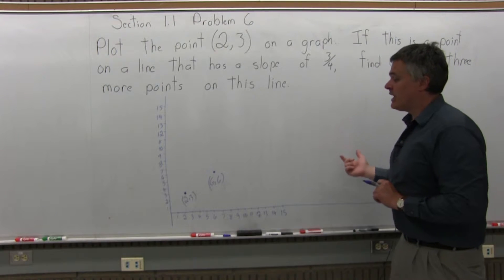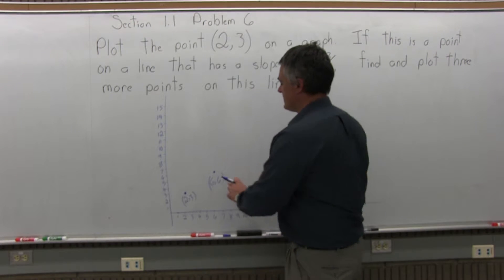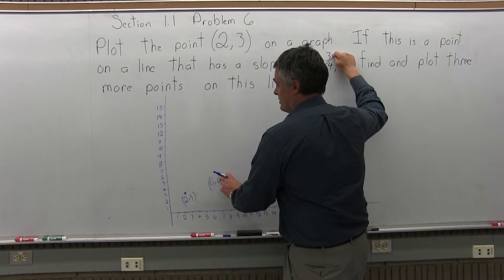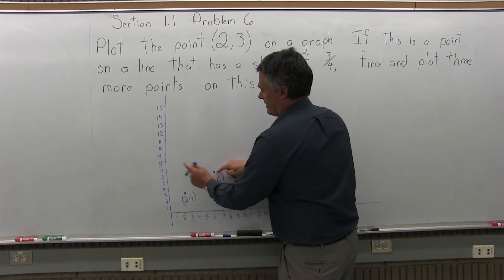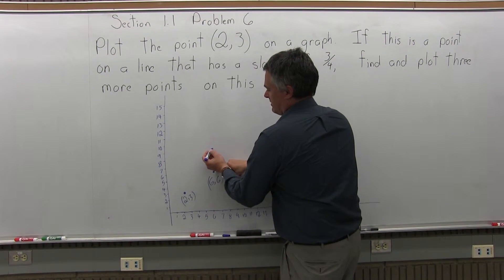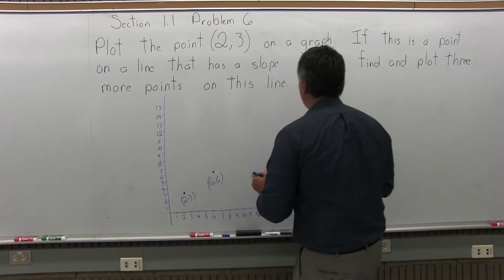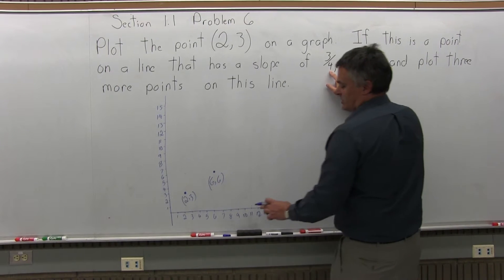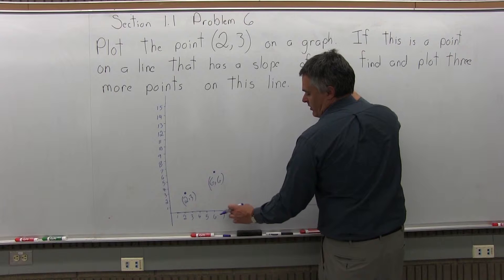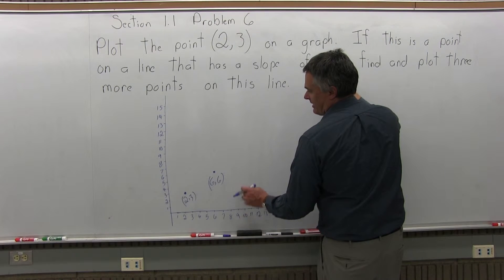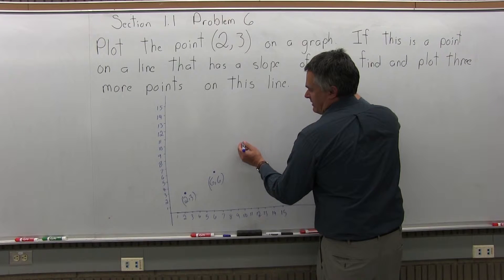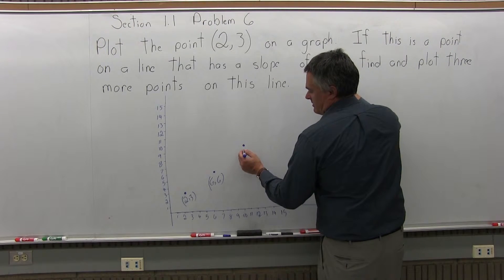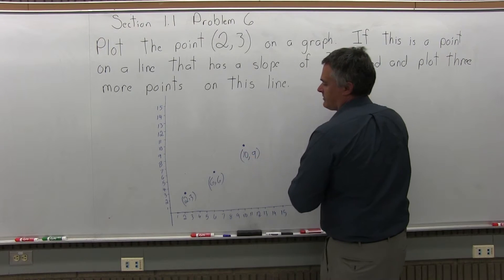To find another point, take the height of 6 and add the numerator: 6 plus 3 more is 9. The next point will be at a height of 9, but we pull it over 4 more in x. We were over 6, so 6 plus 4 more is 10. Going over 10 and up 9 gives the next point: (10, 9).